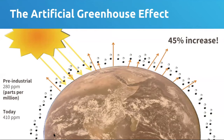Before we began burning fossil fuels in significant amounts, we had a concentration of CO2 in the atmosphere of about 280 parts per million — we call that the pre-industrial concentration. Today we're at about 410 parts per million, which is a value we haven't seen for millions, if not tens of millions, of years.